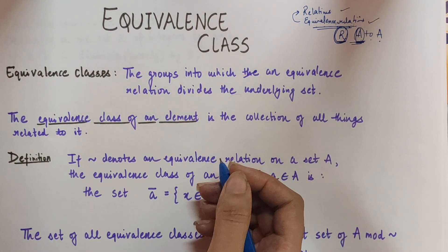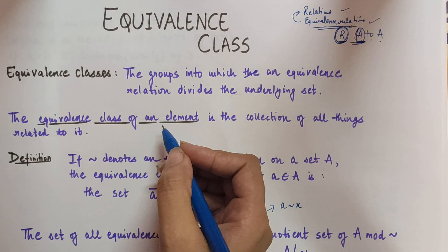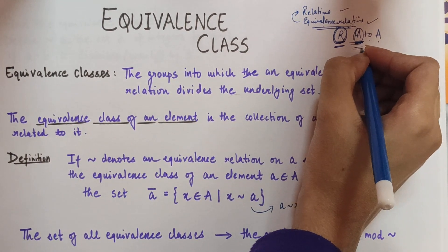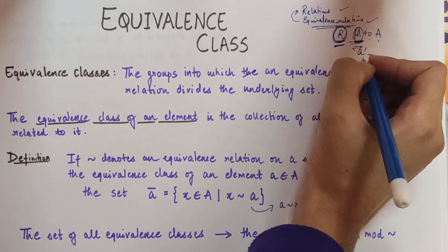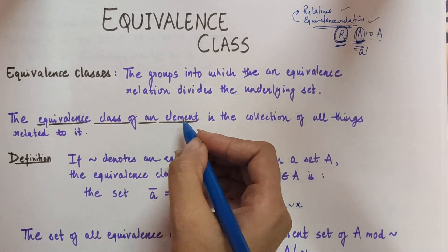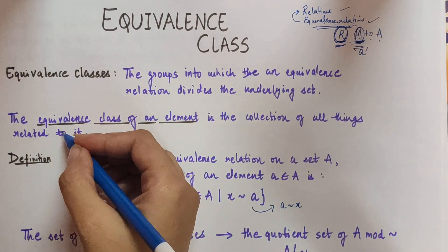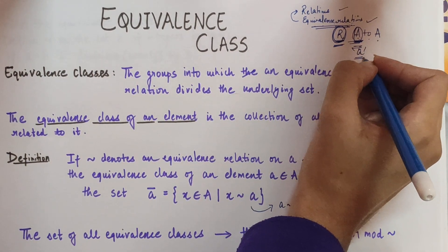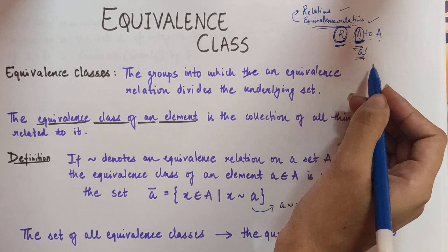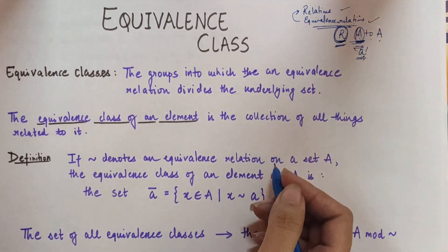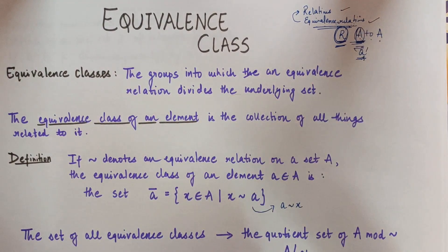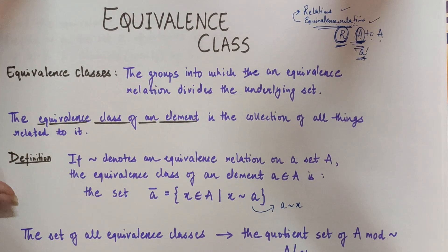Now let's understand what an equivalence class of a particular element of a set is. We have an equivalence relation R on a set A, and let 'a' be an element of the set. The equivalence class of an element is the collection of all things related to it. So the equivalence class of element 'a' is the set of all elements of A which are related to this element 'a'.